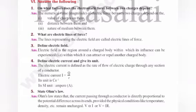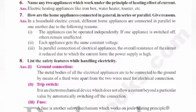Next, sixth one: name two appliances which work under the principle of heating effect of current. The appliances are iron box, water heater, or toaster - these work under the principle of electric heating effect of current.